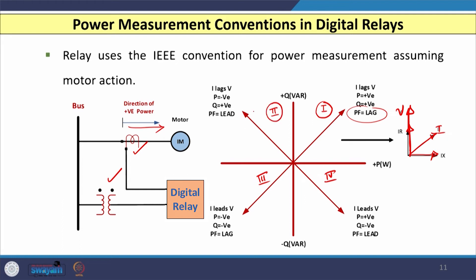In the second quadrant, the active power becomes negative — the resistive component of current is 180 degrees out of phase — while reactive power remains positive, and the resultant current still lags the voltage. The operating point falls in the second quadrant. Similarly, the operation of the third and fourth quadrants can be determined accordingly.